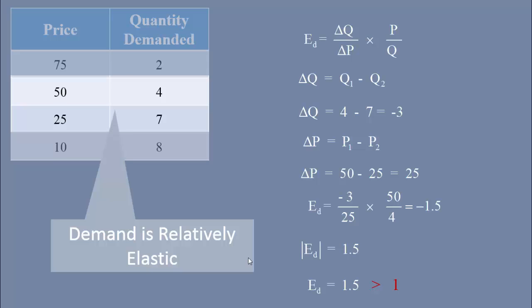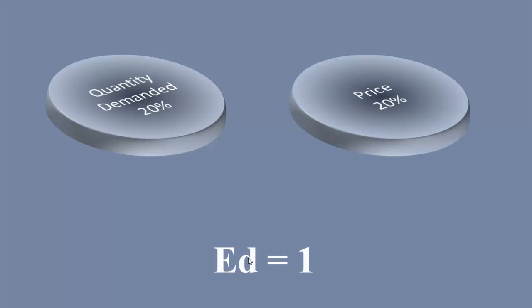What is the logic behind comparing elasticity value with 1? It goes like this. When the quantity and price change by the same percentage, the resultant elasticity value will be 1. For example, assuming quantity changes by 20%, price also changes by 20%. Then 20% divided by 20% gives elasticity value 1. This is called unitary elastic demand.